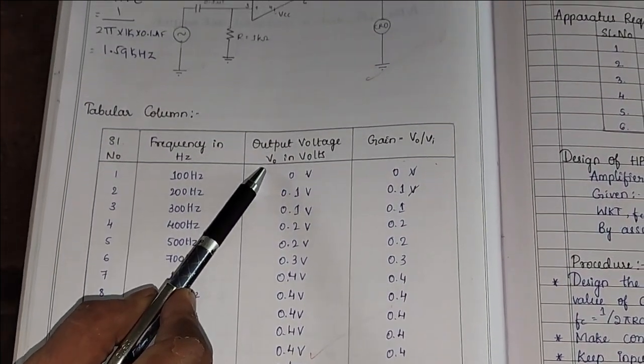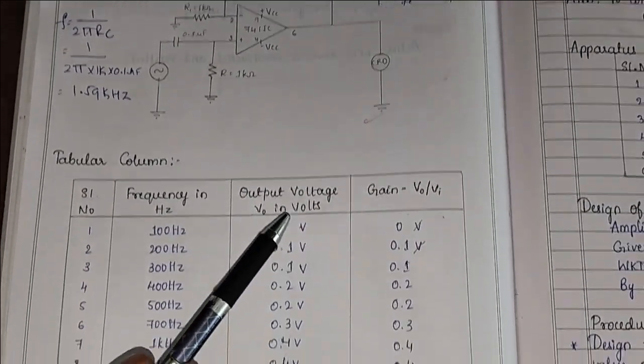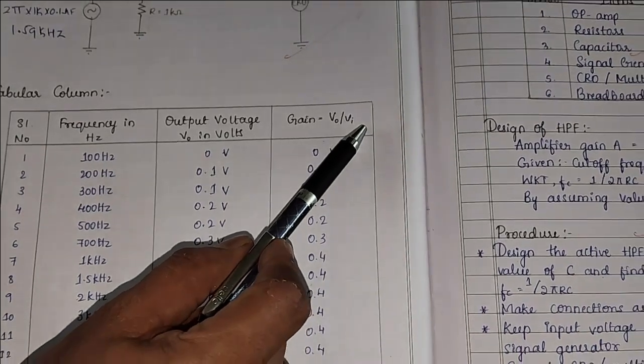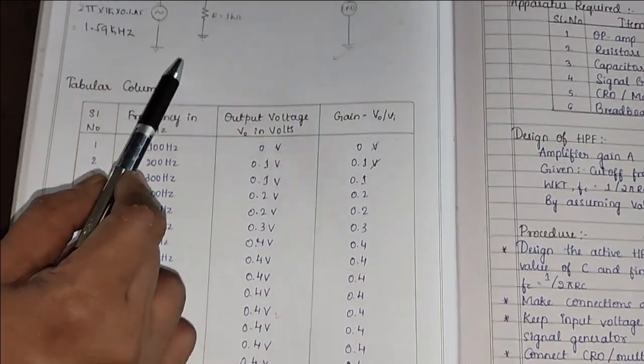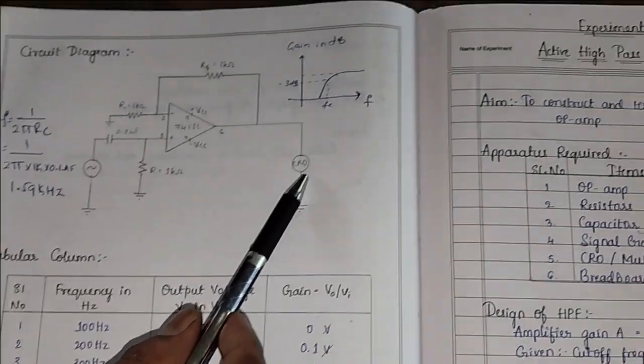We are observing this output voltage at pin number 6 in CRO. At same time we are calculating the gain which is V0 divided by Vin. Here at input voltage we have given as 1 volt and we are observing the output.